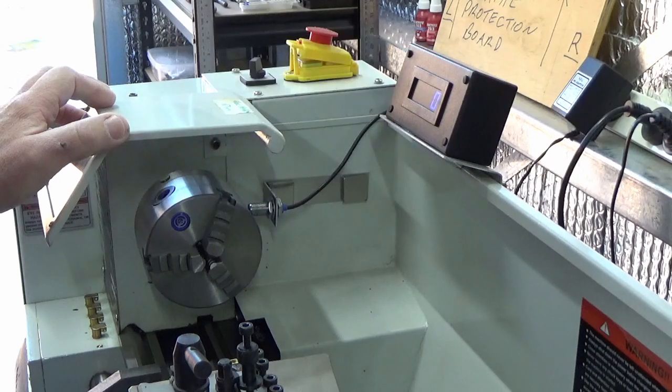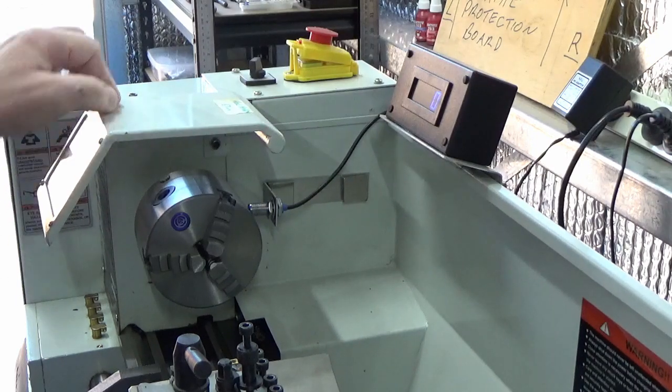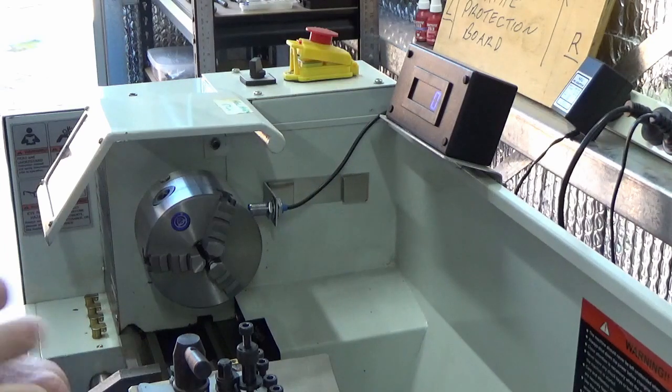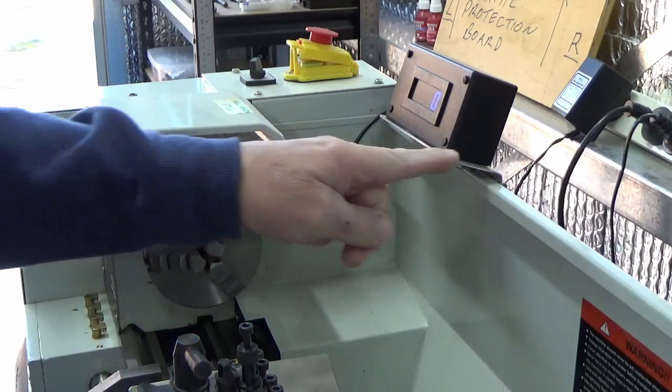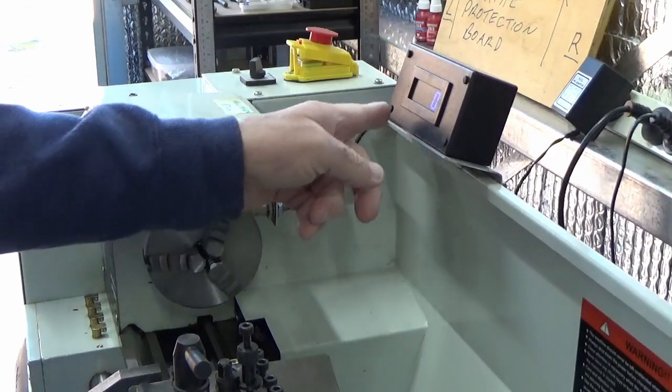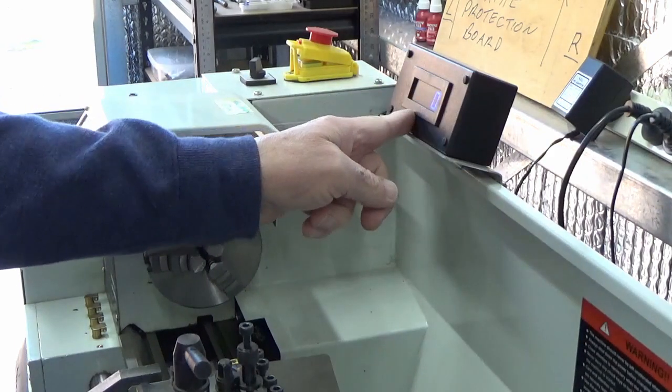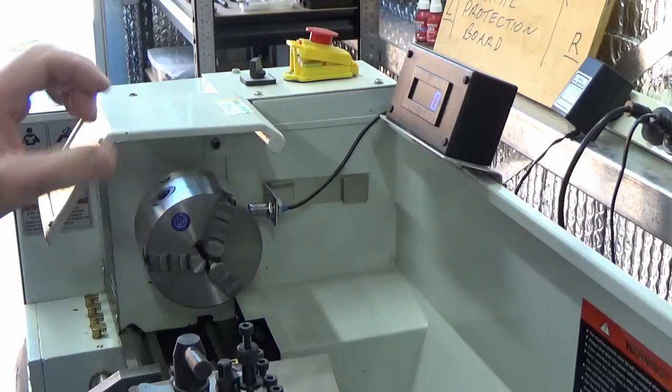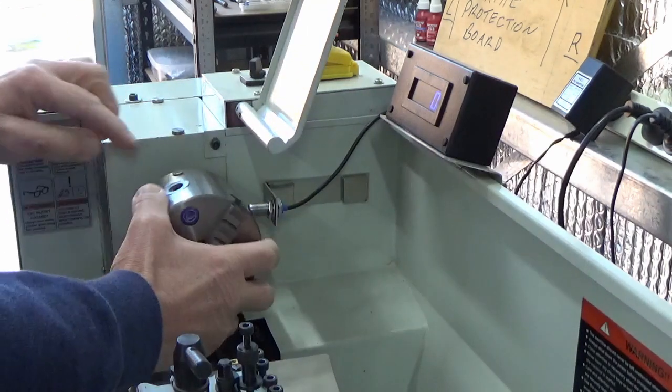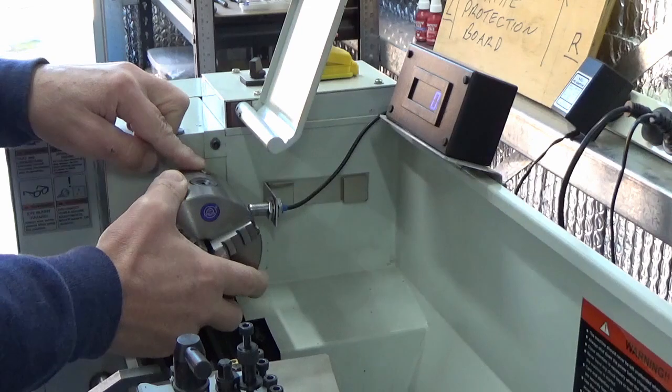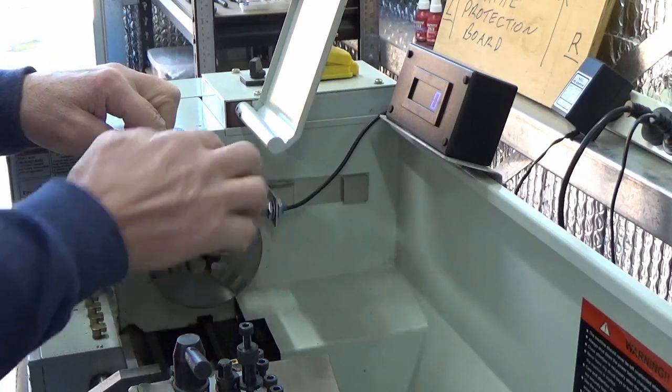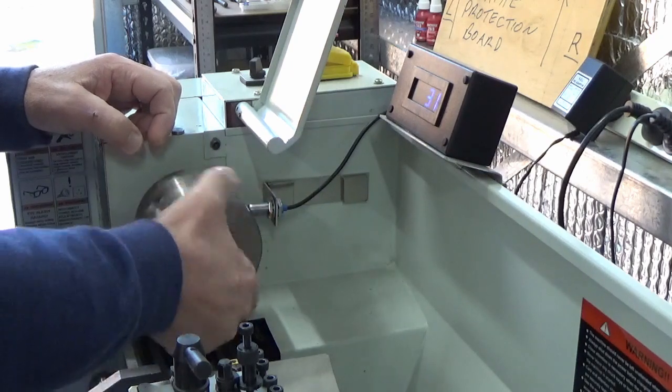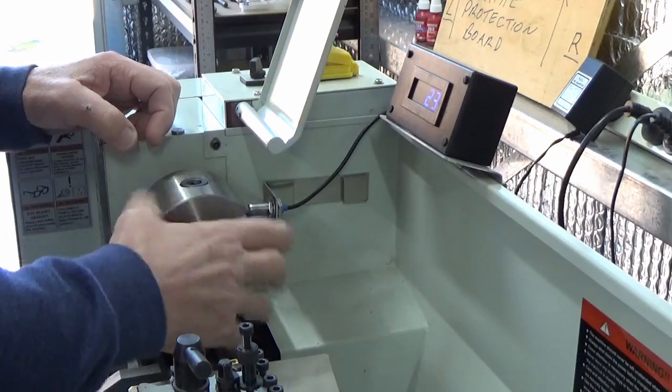The next project we're going to be looking at is making up a taco for our second lathe. This is our first lathe here and this is the system that we've set up. The actual kit comes with the taco, this part here, and the hall effect sensor which is attached here. The way it operates is that there's a magnet attached to the chuck, and as it rotates through, that's picked up by the hall effect sensor.